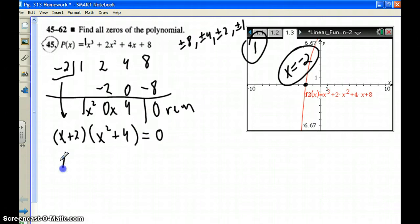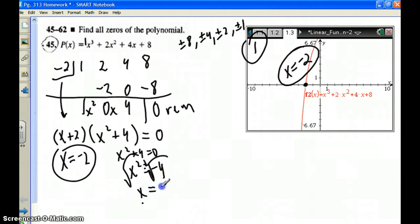So we could set that equal to 0, so we could have x equals negative 2, where we already moved on. And we set this equal to 0. x squared plus 4 equals 0. x squared equals negative 4, square both sides, plus or minus, you get x equals plus or minus 2i.